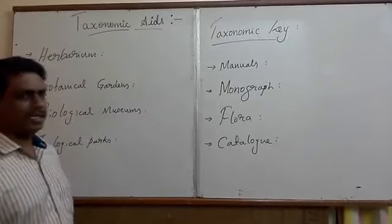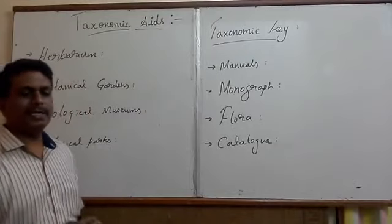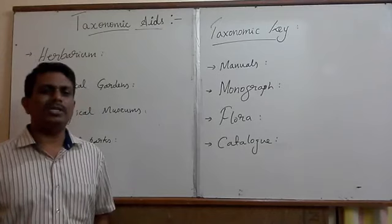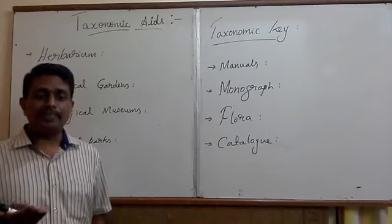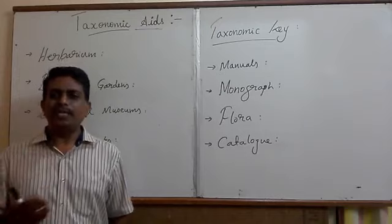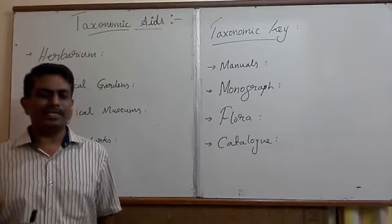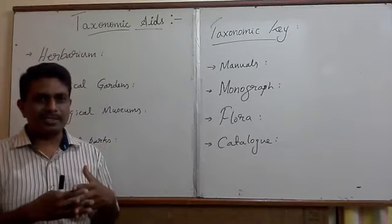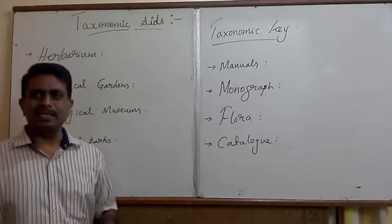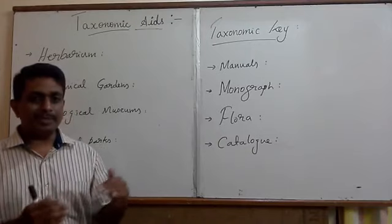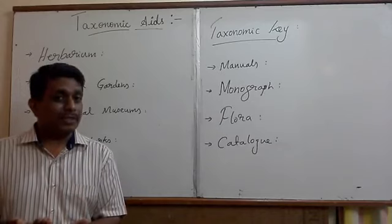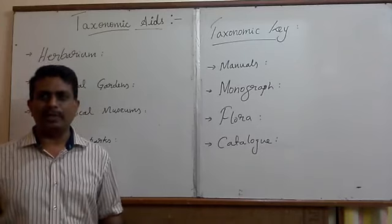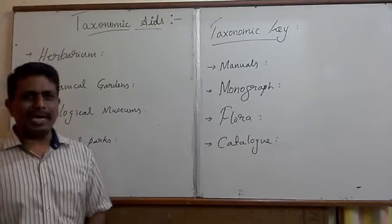Hello students, welcome back to SRM Biology classes. The most important topic in the chapter 'The Living World' is the taxonomic aids. The taxonomical tools and techniques are widely employed in the identification, classification, and understanding of scientific study of living organisms. We need the essentiality of taxonomic aids. Various types of living organisms are collected from different parts of the Earth's surface for taxonomical studies. To preserve specimens under laboratory conditions for future references and for systematic studies, various tools and techniques are essential. These tools and techniques are popularly designated as taxonomical tools.